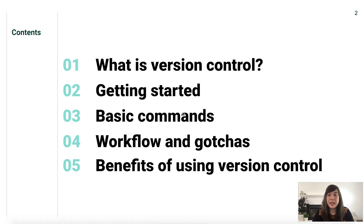We'll begin today by taking a look at what actually is version control and what is Git, and then we'll get started actually installing Git on our computer and getting it up and running. We'll then take a look at some basic commands like initializing a Git repository, making your first few commits, and understanding how feature branches work. Then we'll get into workflow and some gotchas — thinking about how to best use Git in your theme development workflow and what that looks like when you're working with other people and creating new features for a theme for a client, or if you are working on a theme that might be distributed to a bunch of different people and you need to keep track of versions and releases.